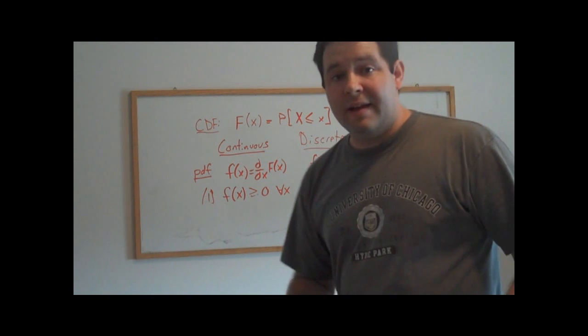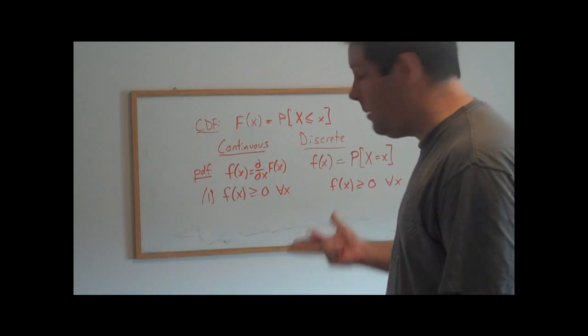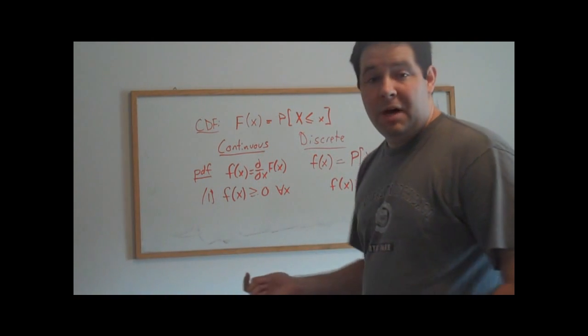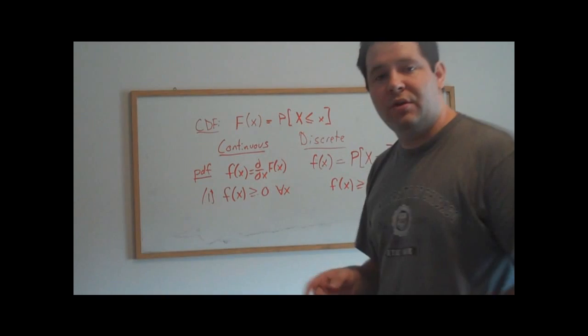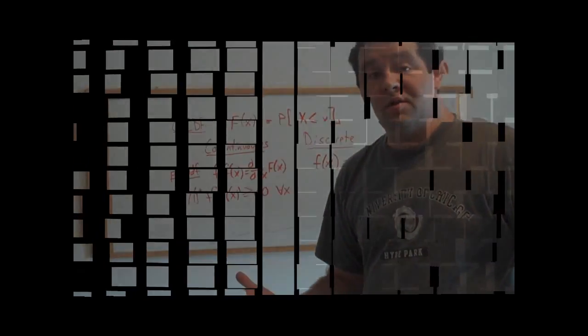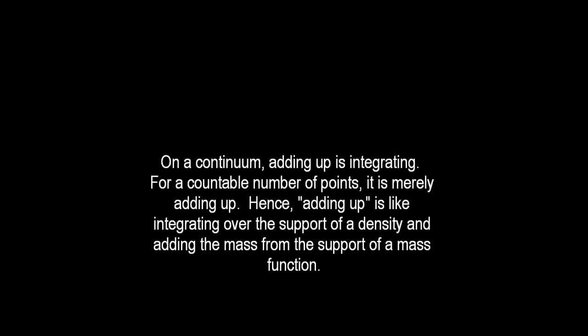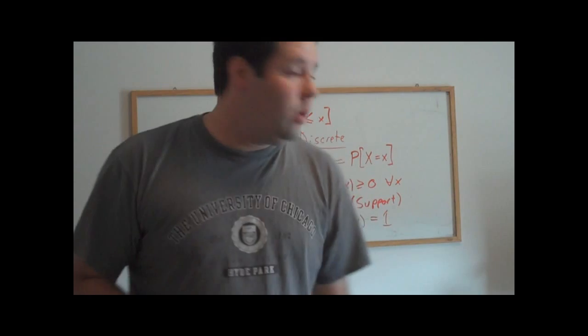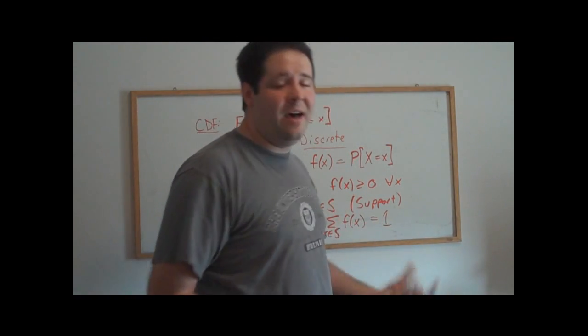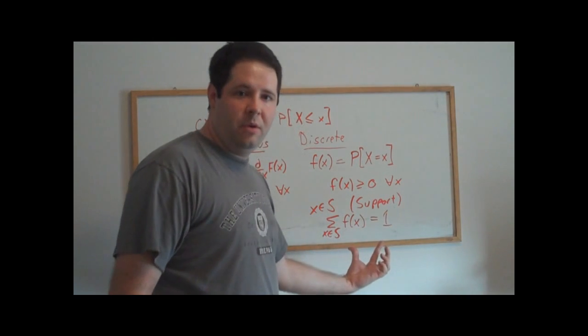And then the next really important property of densities is that if you add them up, if you add up all of the values that x could take on, it has to be that that adds up to one. We're adding up all of the probability that this random variable could take on any value. That probability is going to be one.